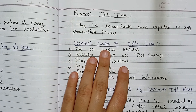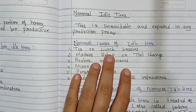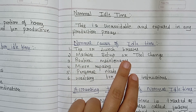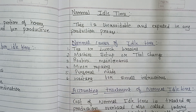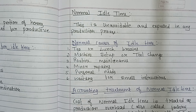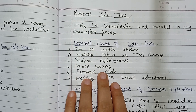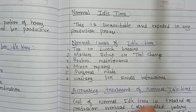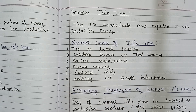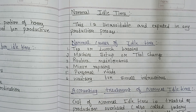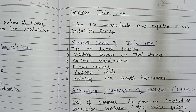The normal causes of idle time include: tea or lunch breaks, which are necessary; machine setup or tool change — the time taken to prepare machines or tools for the next job; routine maintenance — regular upkeep of machines; minor repairs — small quick fixes that happen occasionally; personal needs — short breaks for drinking water or restrooms; and waiting for small instructions — brief pauses while receiving routine guidance.